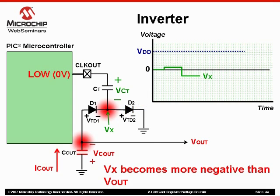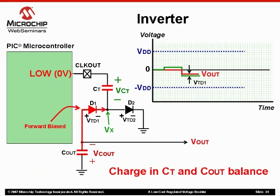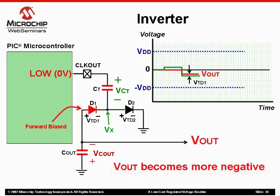Here's where the magic happens. On the negative going transition of the clock out signal, the voltage shown at node Vx becomes more negative than the voltage at node Vout. This will forward bias the diode D1 and current begins to flow across Cout. The voltage across both the transfer and output capacitors will balance out. This causes the voltage at node Vout to drop below zero volts.